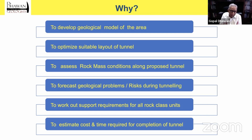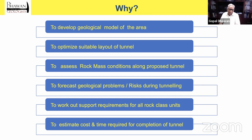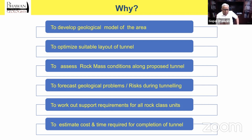Why do we do it? Simple. First of all, we have to understand the geological model of the area or of the hill through which the tunnel is to pass or to be constructed. Optimize the layout of the tunnels — there could be several alternatives of joining two points, but we have to choose the best one, and geology and topography are very important parameters for optimizing the tunnel layout. Assess rock mass conditions, forecast geological problems — particularly the perceived risks during tunneling — and work out support requirements for all classes of rocks and estimate cost and time required for completion of tunnel.